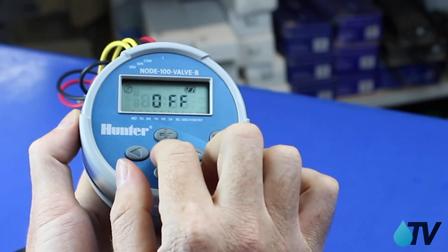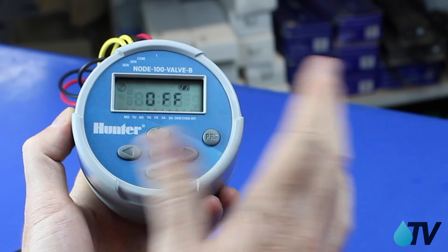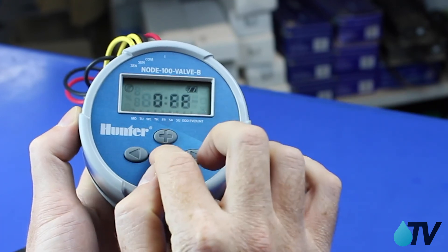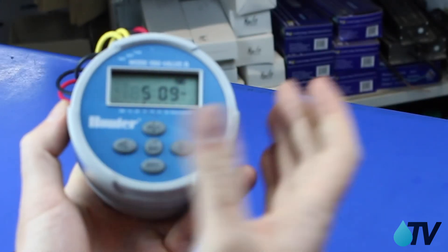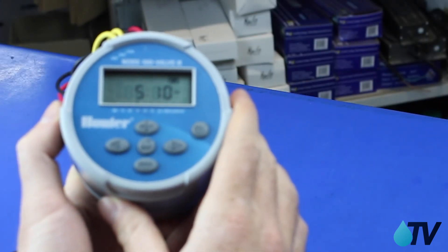And then we have our off section. Once we press the scroll button, we'll leave it there. System never comes on. And then we get back to our current time, which is our idle time or run as programmed. So that's a basic programming of your Hunter Node 100.